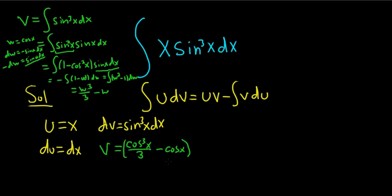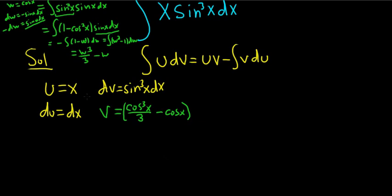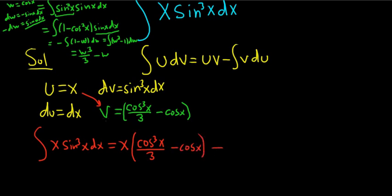All right, let's use the parts formula, and I really hope this works. I have not done this problem before. So let's try it. I'm going to write it over here. The integral, moment of truth, x sine cubed x dx. So that's equal to uv, so it's this times this. I'm just going to write it like x times the quantity, and I won't distribute it. I'll leave it like this.